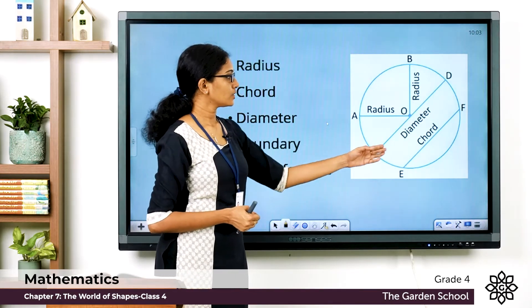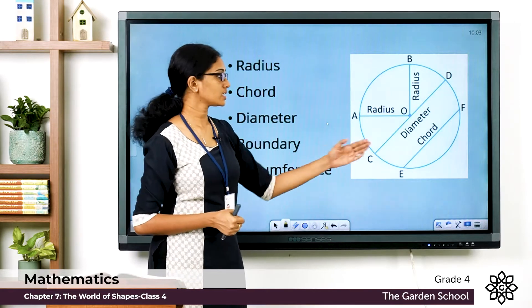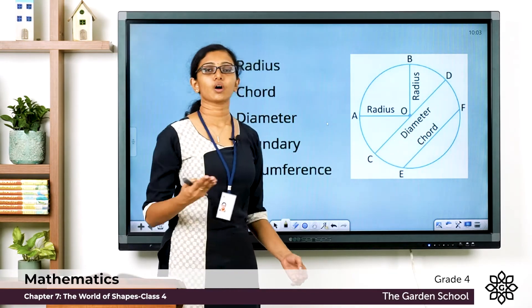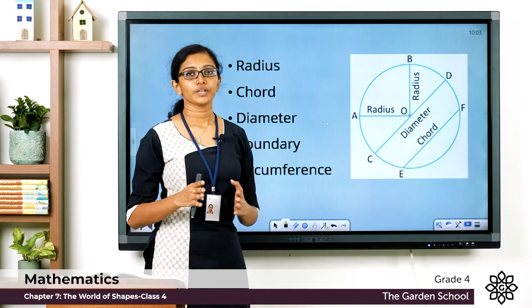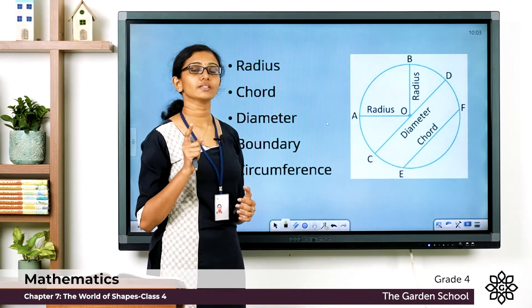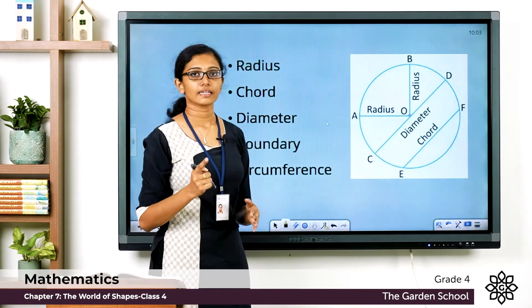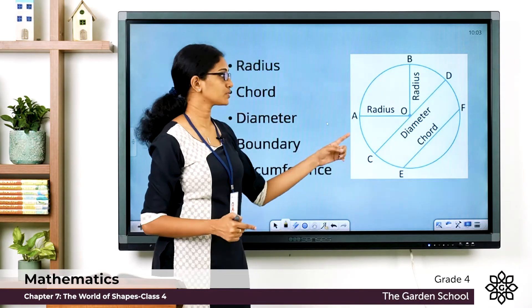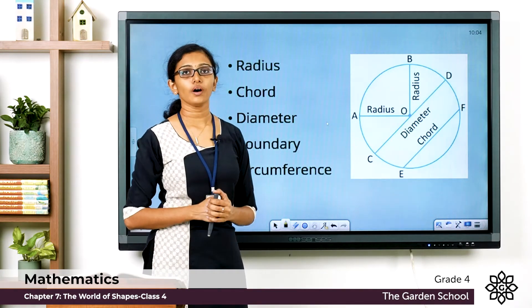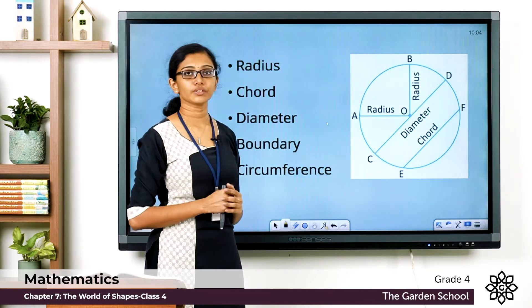You can draw lines from one point on the boundary to any other point on the boundary of a circle — this line is called a chord of the circle. Here the line EF is a chord of this circle. When you draw a chord between two points on the boundary and it passes through the center, that is called the diameter of the circle. CD is a diameter — it connects points C and D and passes through the center. In any circle, the diameter is the longest chord, and you can draw an infinite number of chords, diameters, and radii.